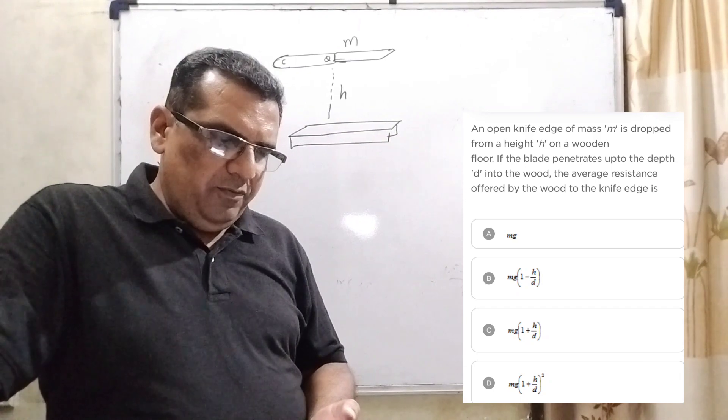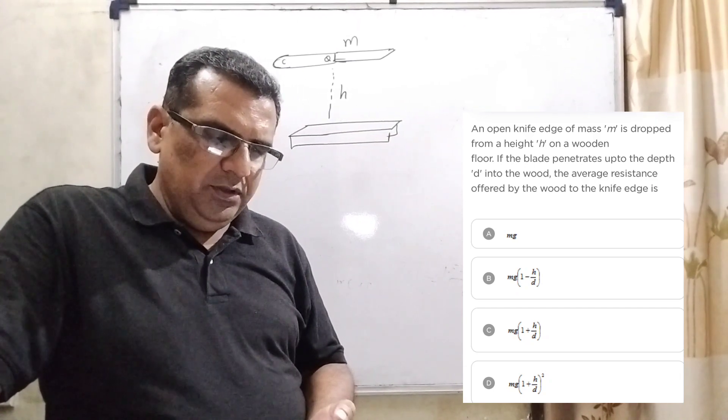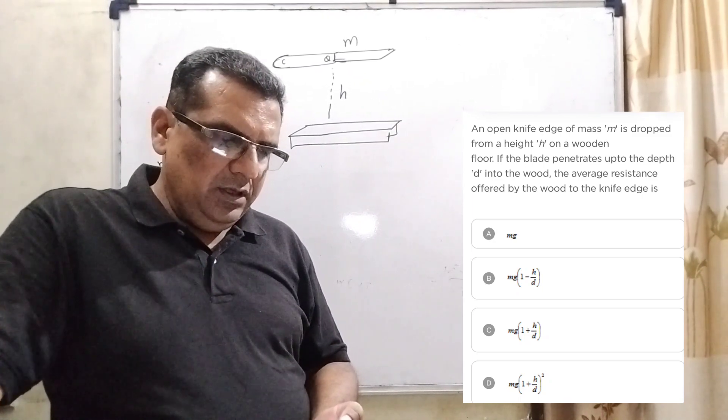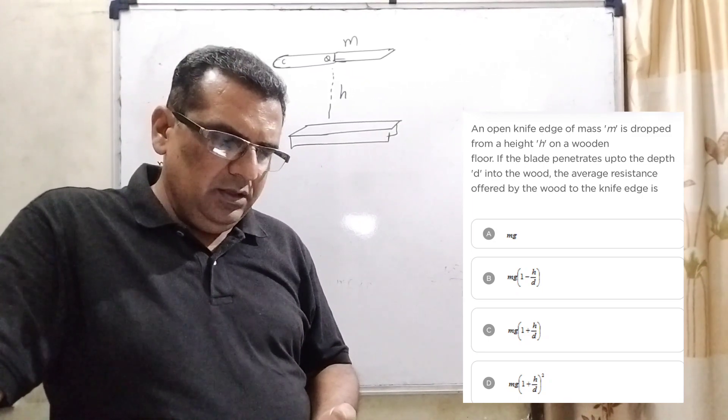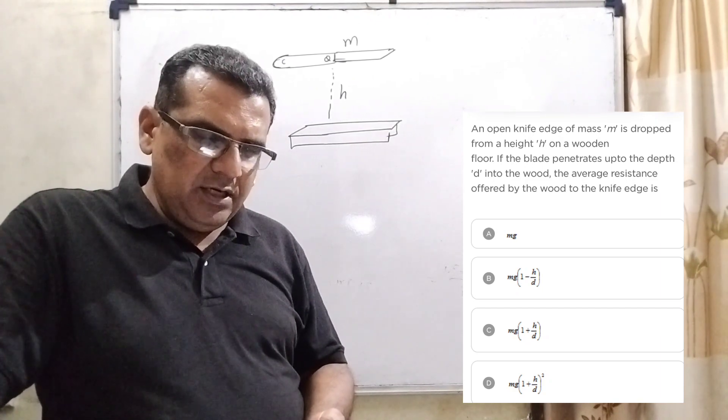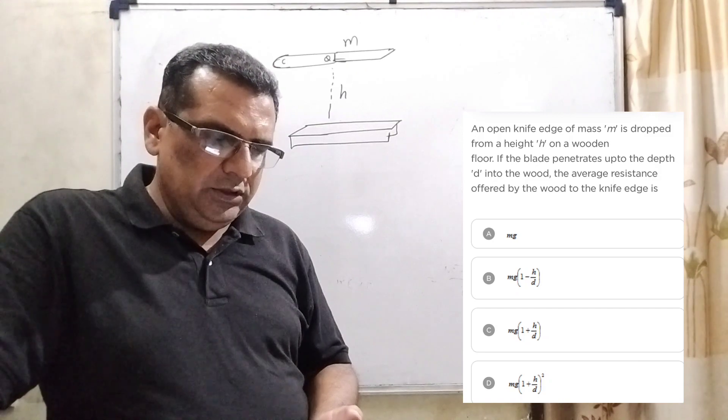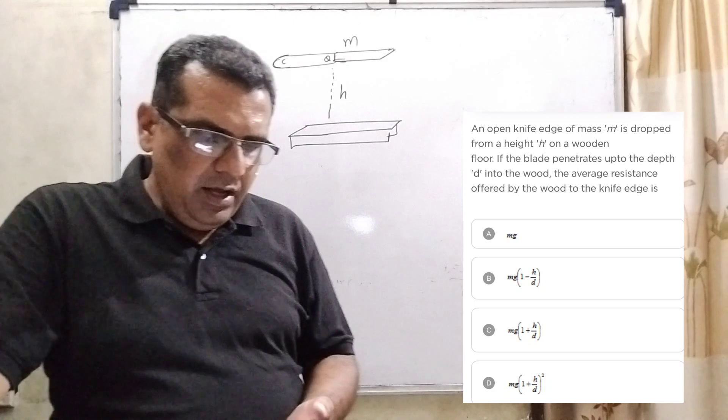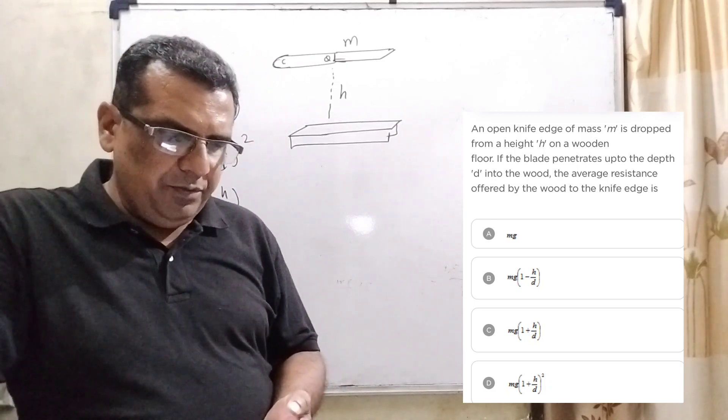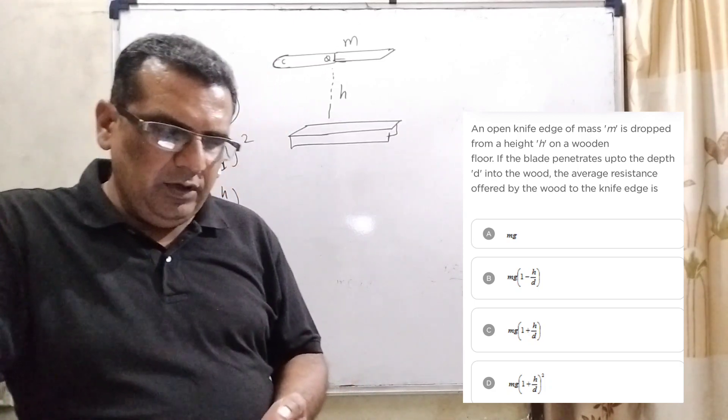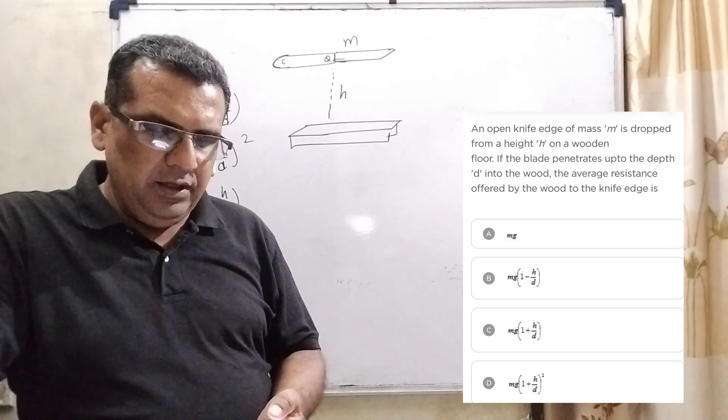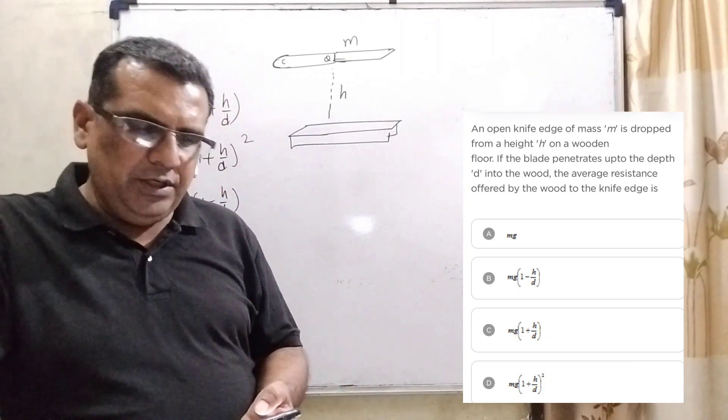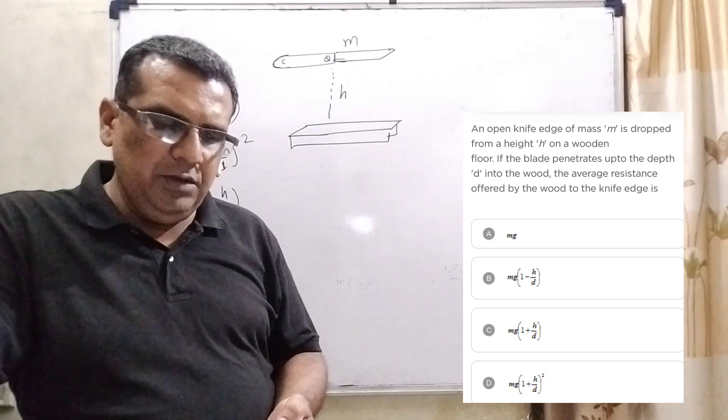An open knife of mass m is dropped from a height H on a wooden floor. If the blade penetrates up to the depth D into the wood, the average resistance offered by the wood to the knife edge is. Here we have given four options. Option A: MG into bracket 1 plus H by D. Option B: MG into bracket 1 plus H by D whole square. Option C: MG into bracket 1 minus H by D. Option D: MG into bracket 1 plus D by H.